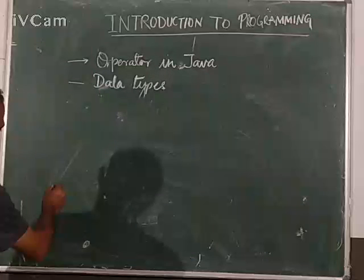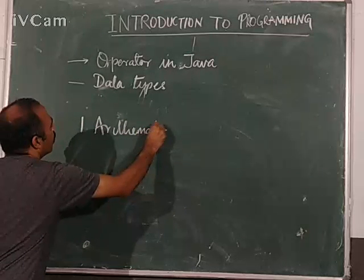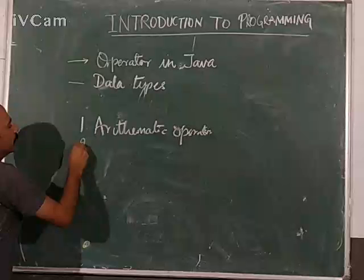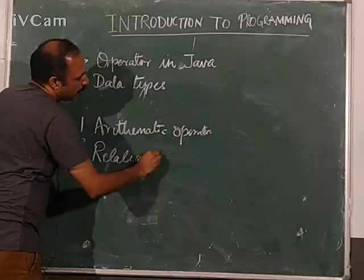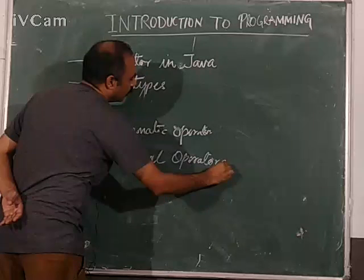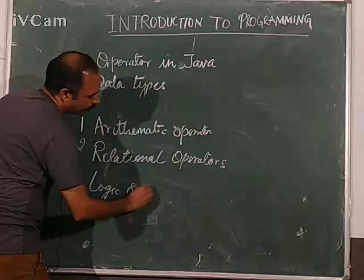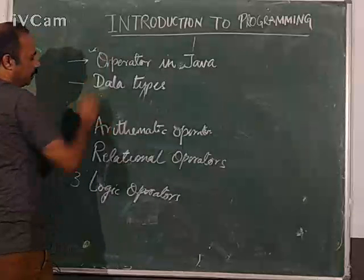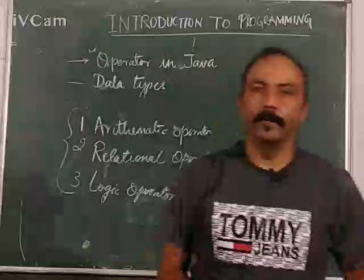There are three types of operators in Java: number one, arithmetic operators; number two, relational operators; and number three, logical operators.